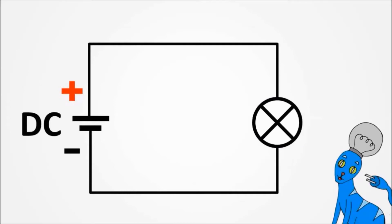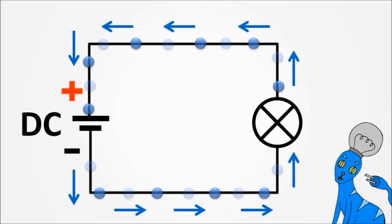As we saw in the last episode, the electrons flow from the negative to the positive, and that will make the light bulb lit.